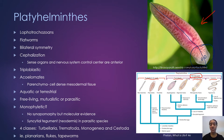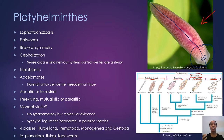Planarians can regenerate their lost and missing parts. Also in the examples are flukes. If any of you are interested in the medical field or parasitology, flukes and tapeworms are going to be of a lot of interest to you because they cause a lot of issues in humans, as well as in various animals like pets and livestock.